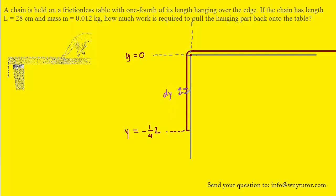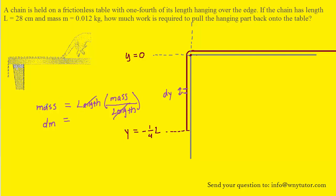We want to find the mass of that segment. We can call it dm, which would equal the length of that segment multiplied by the mass density — that is, mass per unit length. If you examine that equation, the lengths cancel and we have mass equaling mass, so the equation makes sense. The length of this tiny segment is dy, and the mass per unit length is simply the total mass of the wire divided by its total length — for now we'll just use m divided by L.